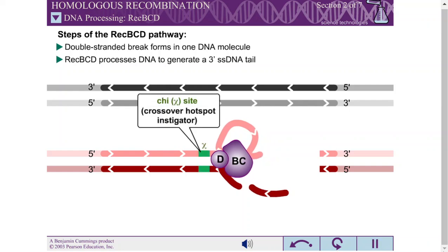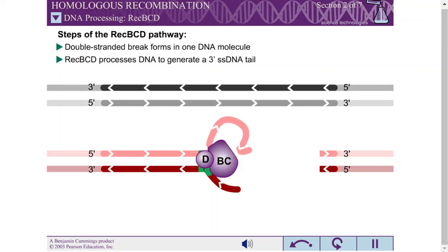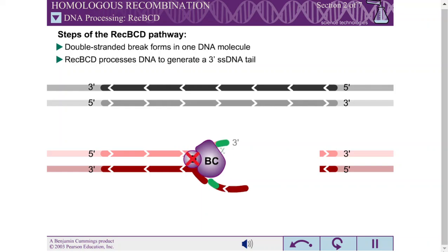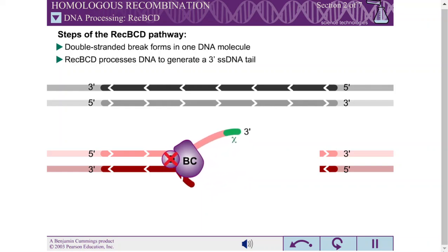E. coli DNA contains relatively frequent 8-nucleotide crossover hotspot instigator sequences, commonly referred to as chi-sites. When REC-BCD encounters a chi-site, its nuclease activity is altered. The mechanism of this change is unclear, but appears to be associated with either the inactivation or loss of the REC-D subunit.